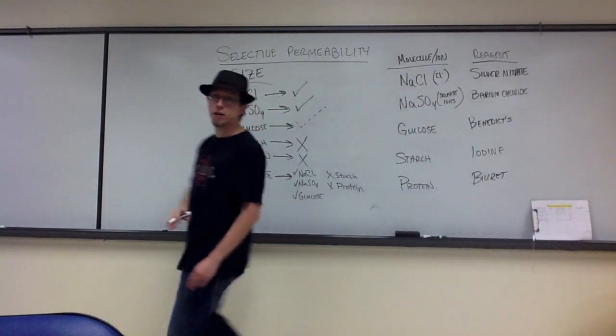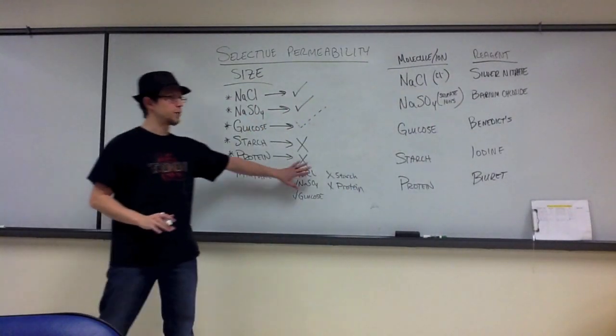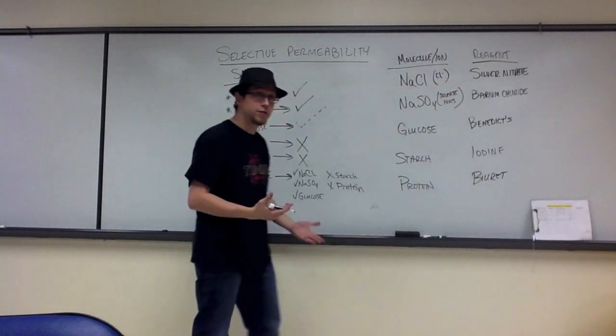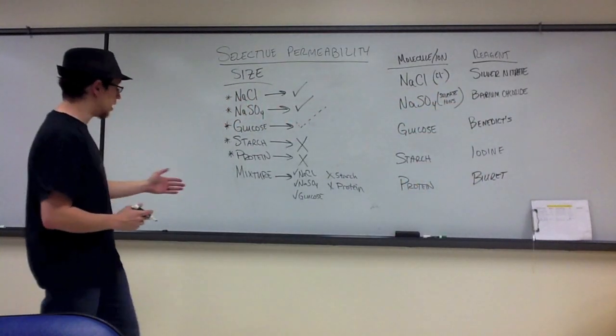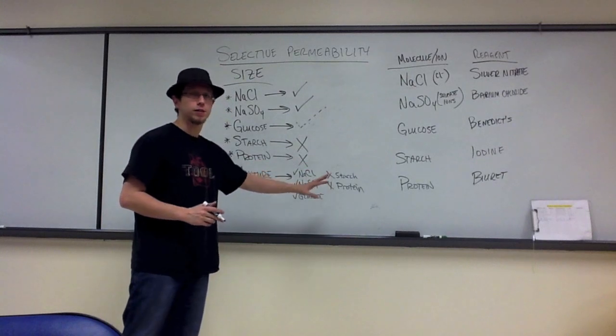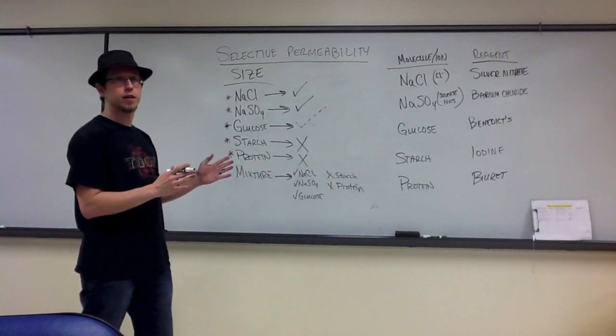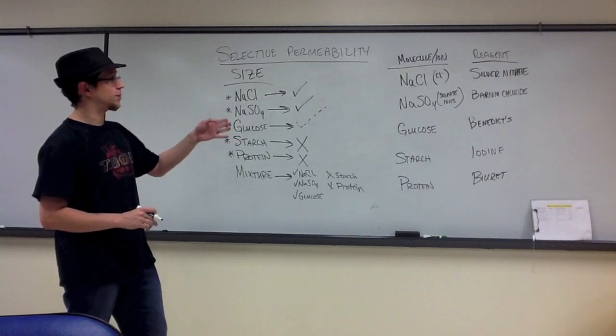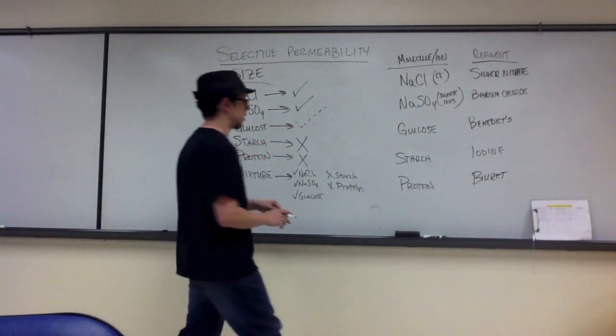Remember, with the mixture, you took five test tubes and filled them with mixture. And then you added one of these five to each of those test tubes to test and see if any of these were present in that beaker from your mixture solution. So now let's talk about what color we're expecting to see with some of these.